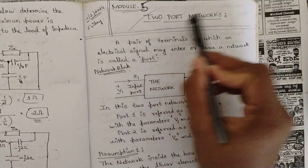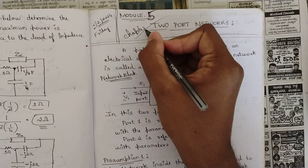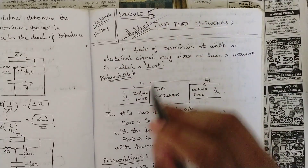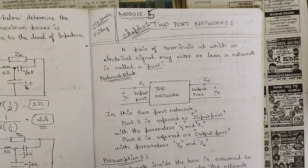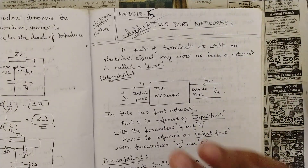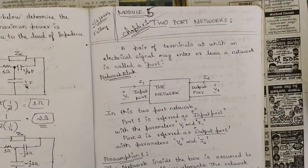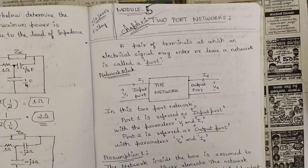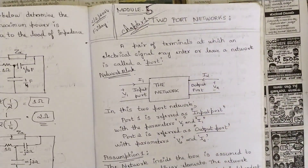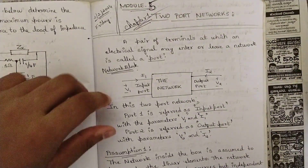The name of the module is two-port networks, and this is the first chapter. This module is very big and is divided into two chapters. The second chapter is resonance — also a very interesting topic with straightforward problems. The two types of resonance are series resonance and parallel resonance. This first chapter also has many interesting concepts and you will find it easy to understand.